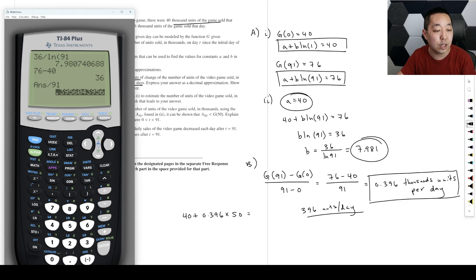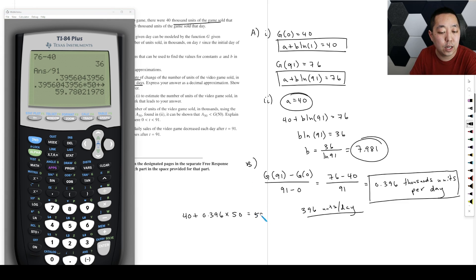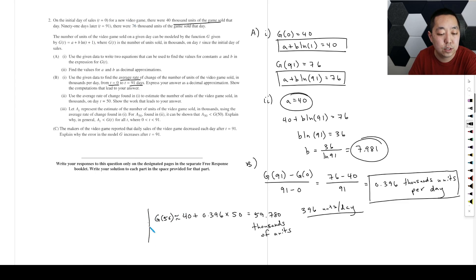So I'm going to take this value. Use the unrounded values when you do this. That times 50, and then add 40 to it. And that's going to be 59.780 thousands of units. So we'd say G of 50 is approximately equal to that. You probably want to use that function notation just to be clear on that one. So that is for part two.